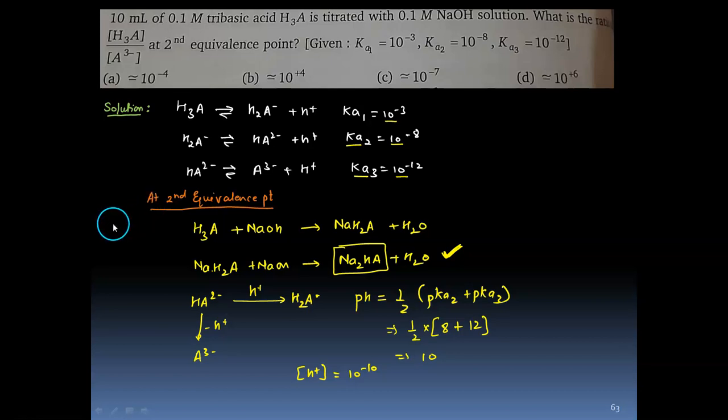Now in this question, it says that 10 mL of 0.1 molar tribasic acid H3A is titrated with 0.1 molar NaOH. What is the ratio of H3A to A³⁻ at second equivalence point?